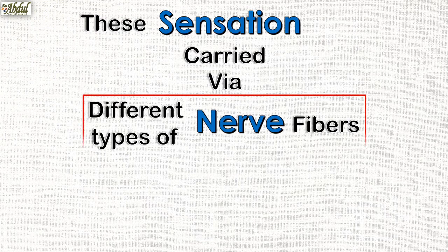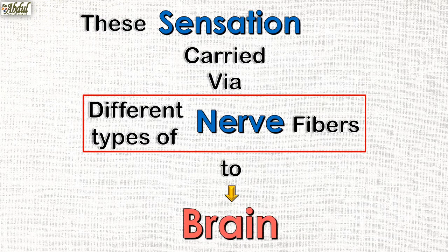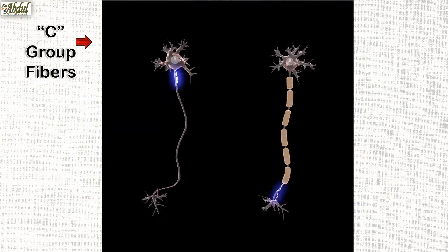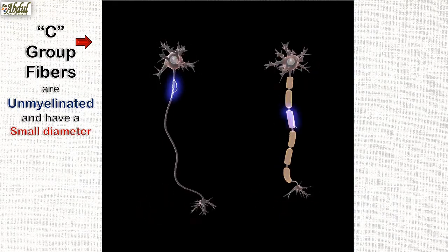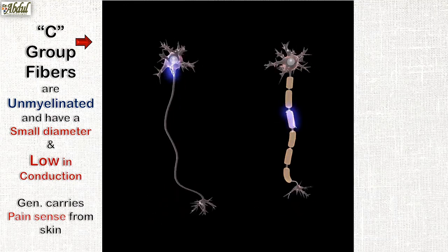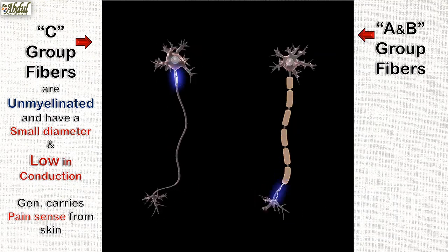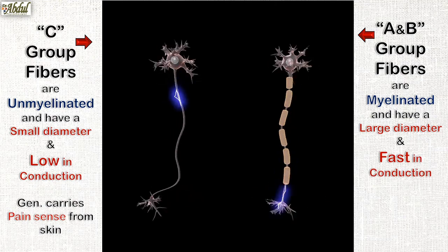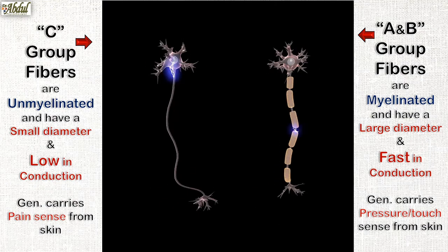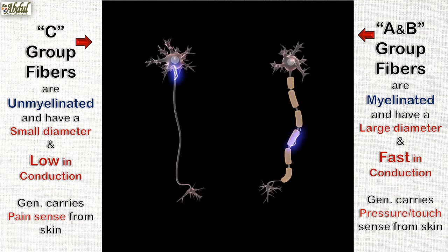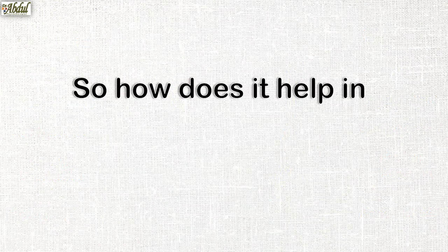These sensations are carried by different types of nerve fibers to our brain. C group fibers, as you can see in this diagram, are unmyelinated, have a small diameter, and are slow in conduction — they generally carry pain signals from the skin. Whereas A and B group fibers are myelinated, have a large diameter, and are fast in conduction — they generally carry pressure and touch sensations from the skin.